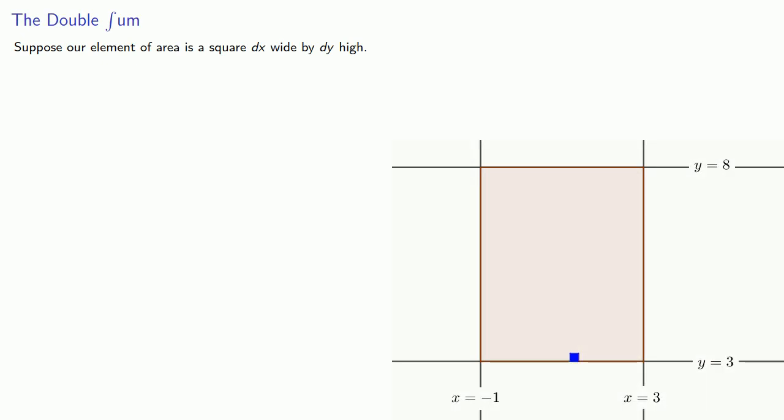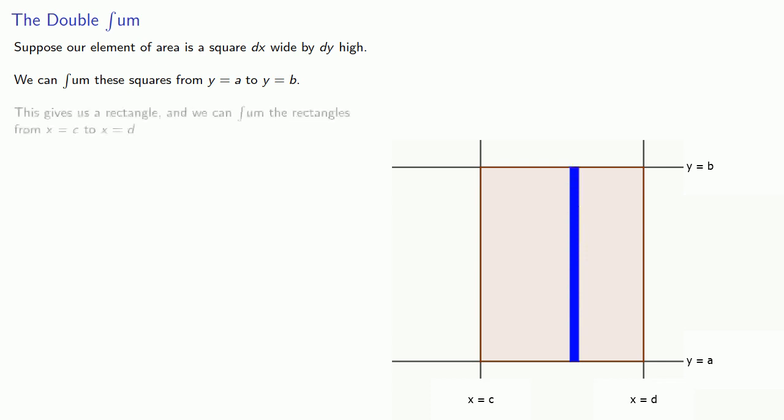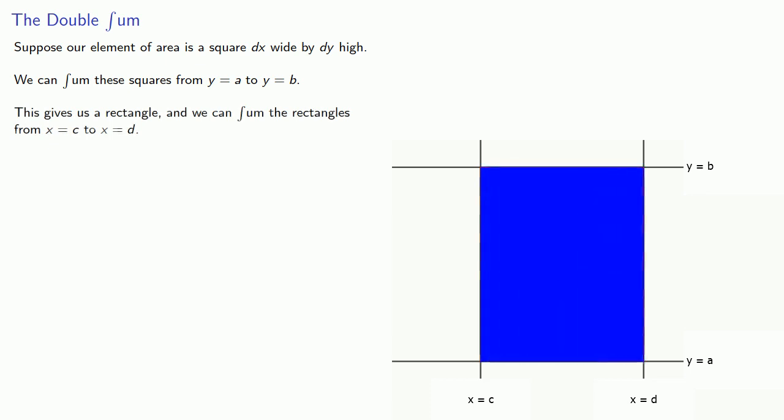Geometrically this looks like the following. Suppose our element of area is a square dx wide by dy high. We can sum these squares from y equals a to y equals b, and this gives us a rectangle. We can then sum the rectangles from x equals c to x equals d. And this gives us the area as an iterated integral.